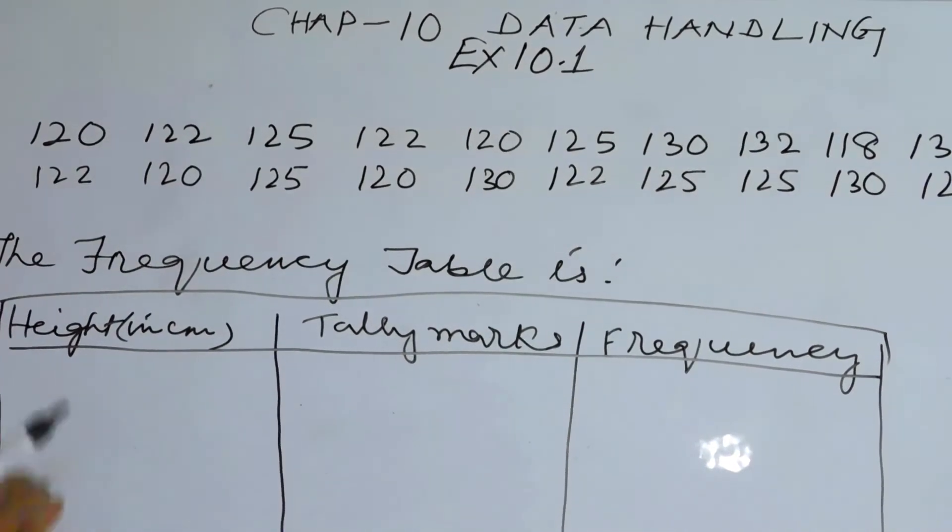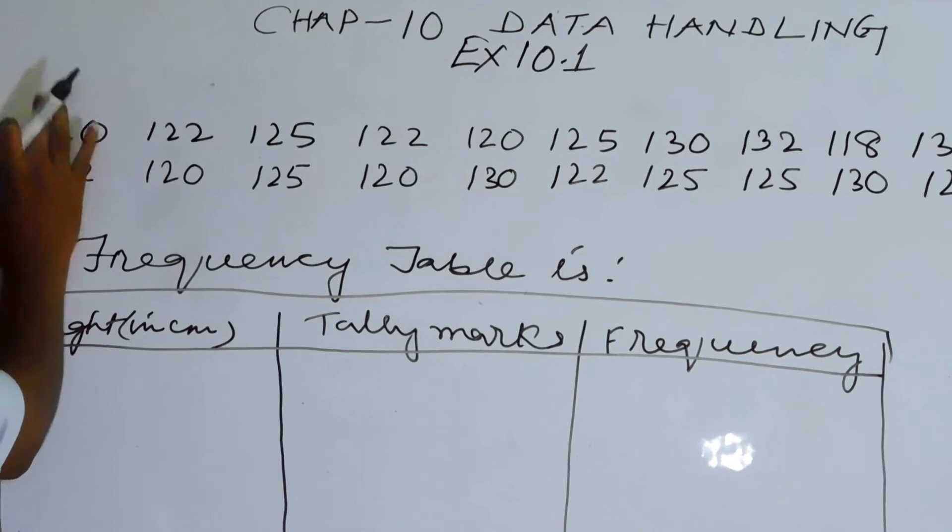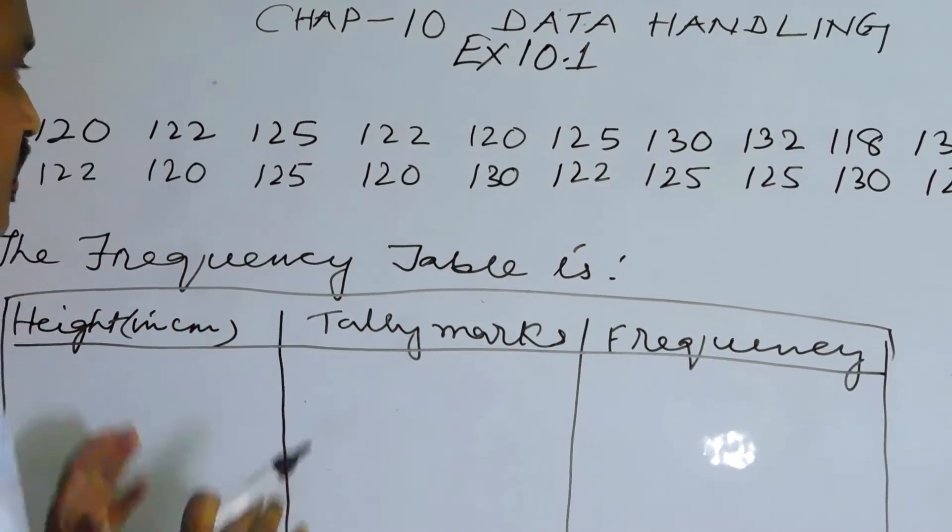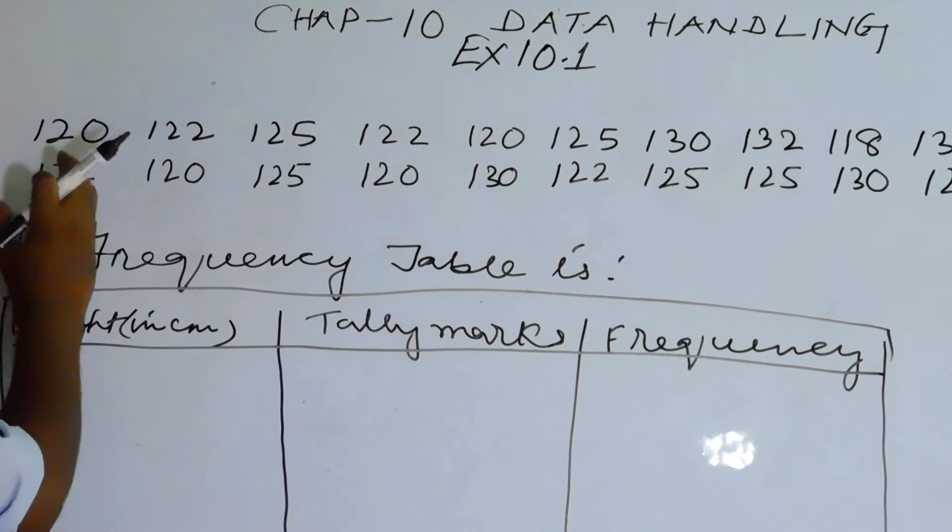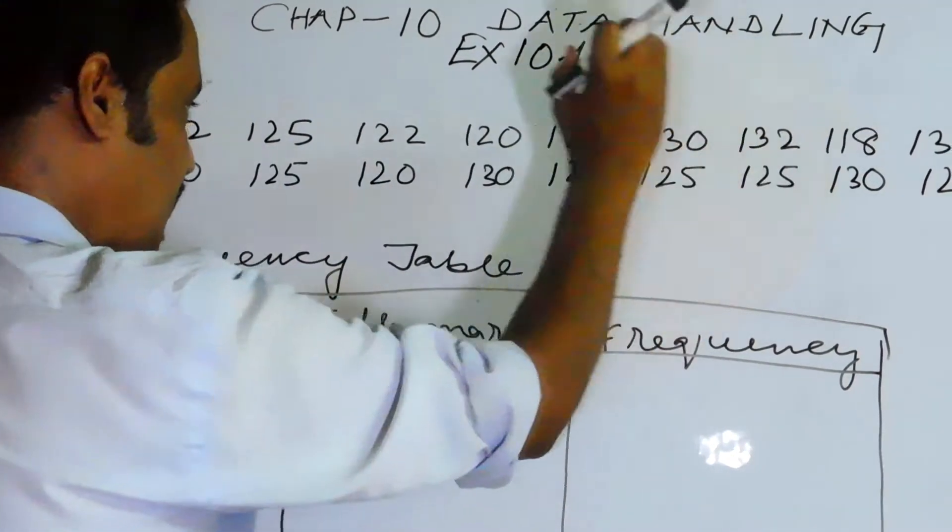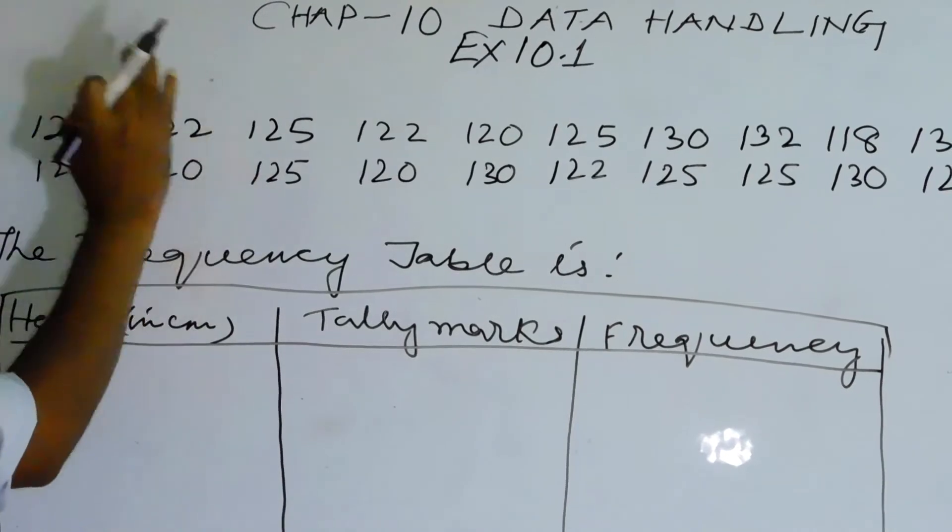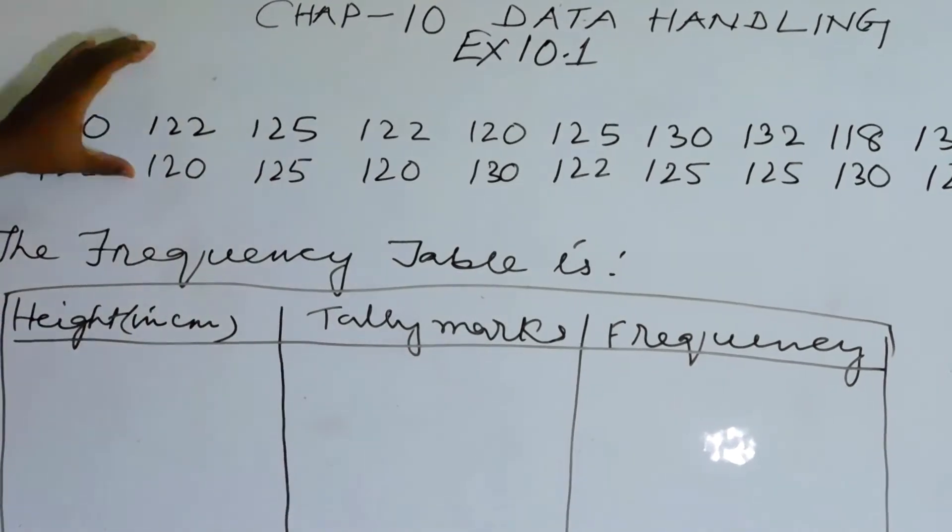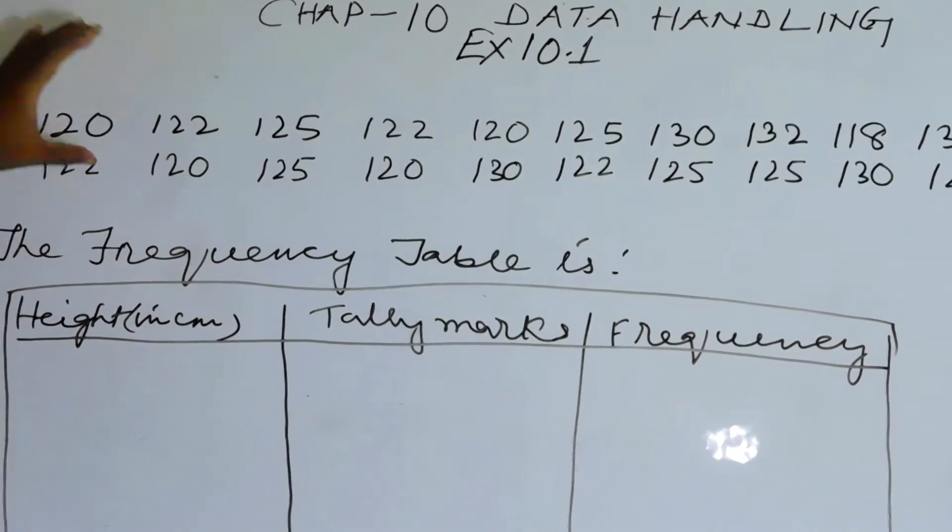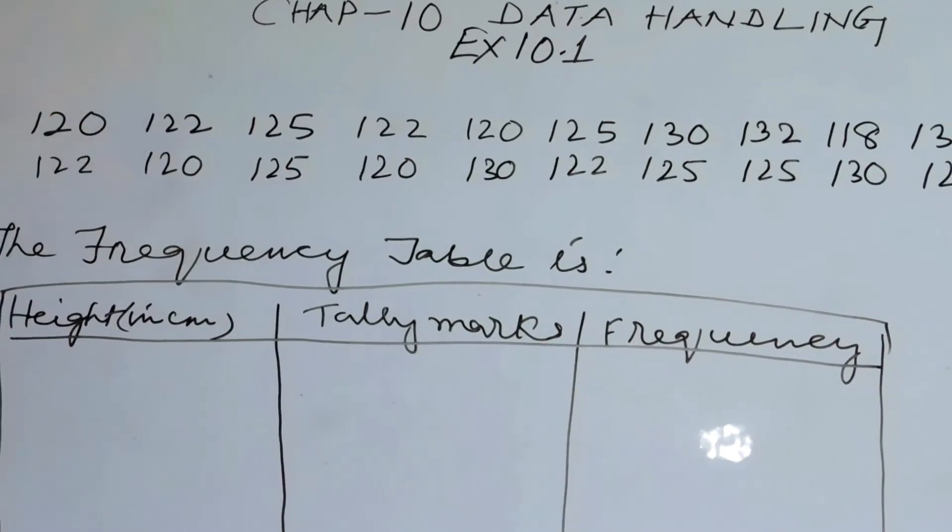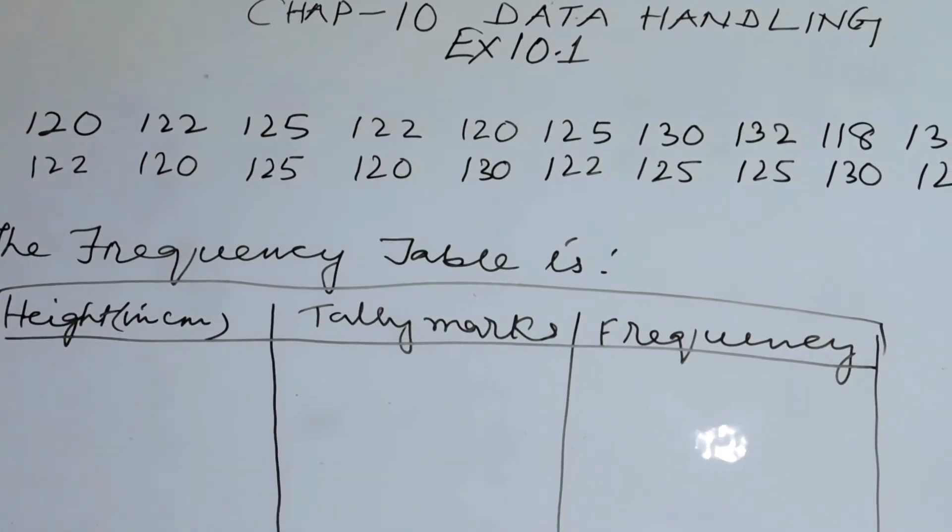Now children your answer part starts from here. What you have to do is you have to note down all the data and tally it with the question whether any data are missing or not. It is about the height of 20 people. If you miss out any data then you won't get the correct answer.